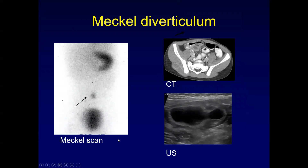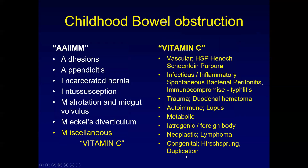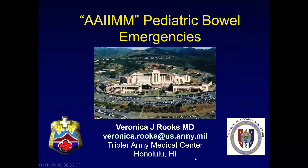Meckel's diverticulum is a remnant of the omphalomesenteric duct connecting the small bowel to the umbilicus. It is located along the anti-mesenteric border, and 30% of the time contains ectopic gastric mucosa, which may cause intussusception, bleeding, or obstruction. A Meckel scan using technetium-99m pertechnetate will show persistent accumulation of the radiotracer, and CT and ultrasound can demonstrate abnormal fluid collections. The miscellaneous category is vast and using your clinical acumen can help guide appropriate imaging. This concludes the pediatric bowel emergencies segment, aimed at imaging for correct clinical diagnosis.